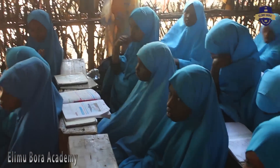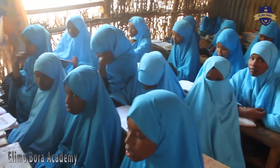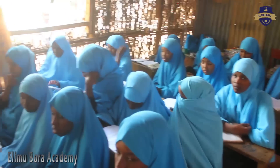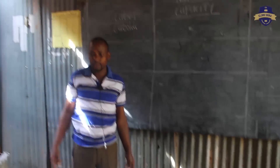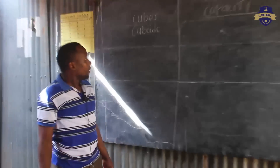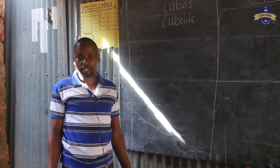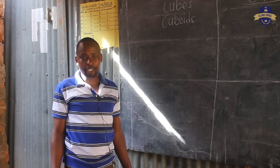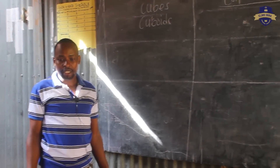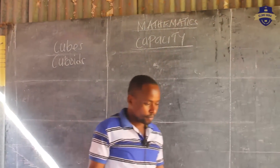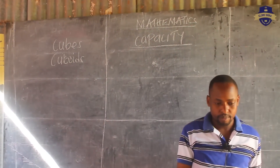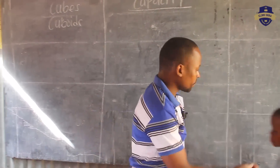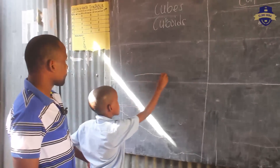Who will come and draw for us a cube? One cube? Yes, can you come? One cube. Who will come and draw for us a cuboid? A girl? A cuboid? One cube.